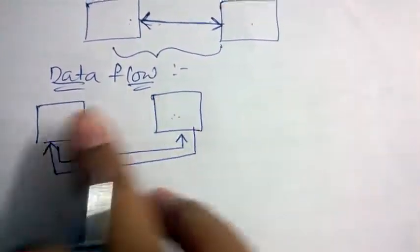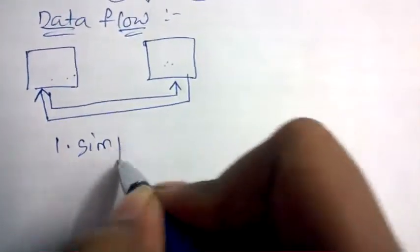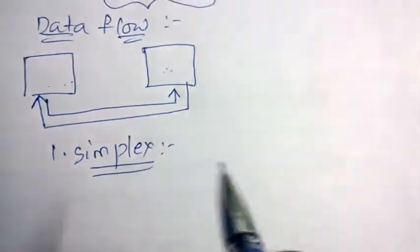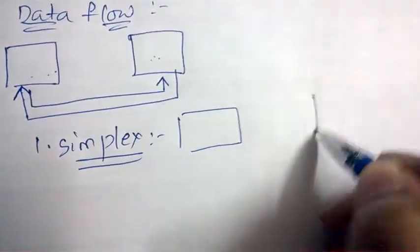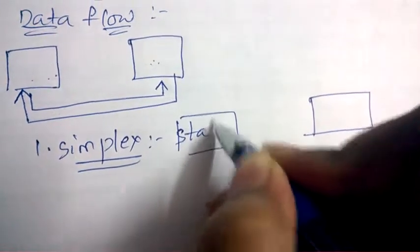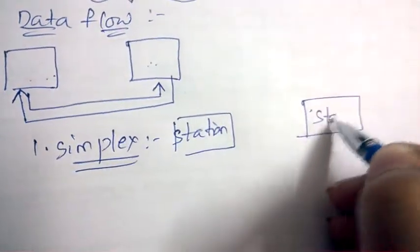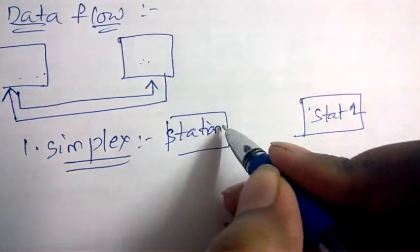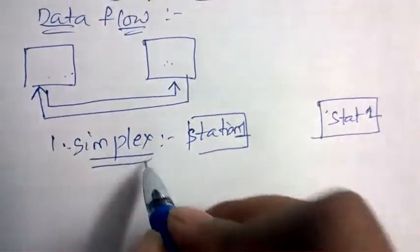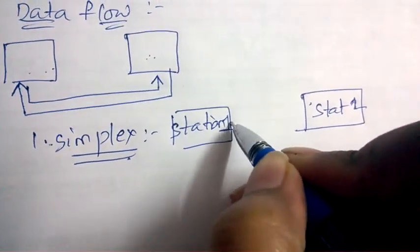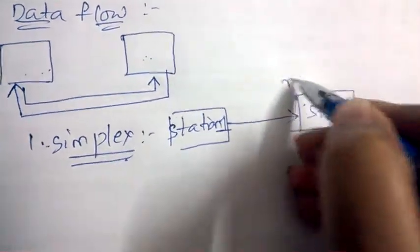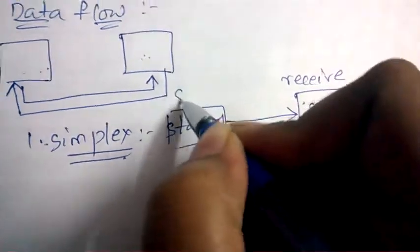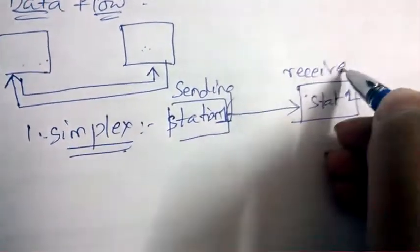Devices can flow data among them in three types. The first type is simplex. Under simplex, if there are two stations — station one and station two — only one device will be transmitting the data and the other device will just receive the data. Device one sends the data and device two only receives the data.